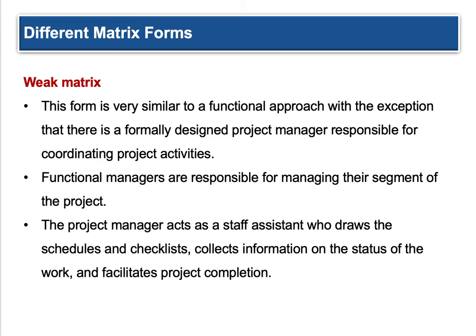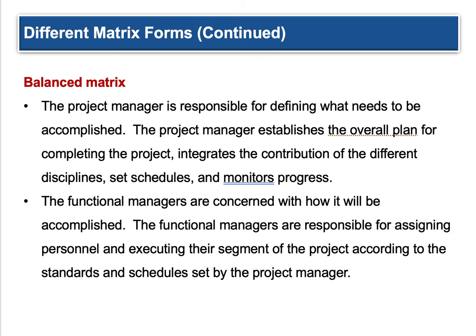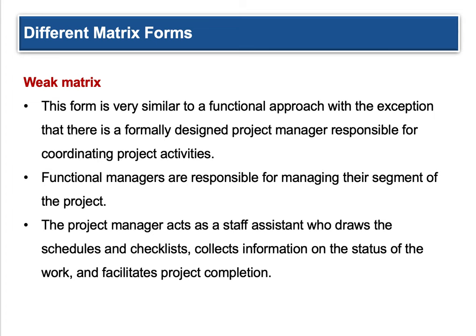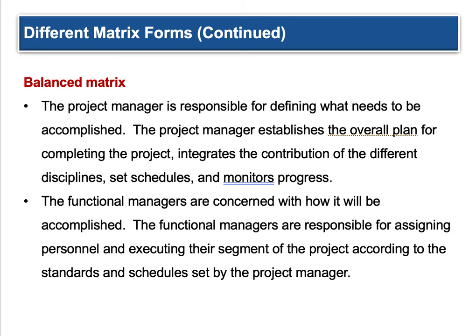In a weak matrix, the functional manager is responsible for managing their segment of the project — they're the owner. That takes out the "lack of ownership" disadvantage. The project manager acts as a staff assistant who draws schedules, checklists, collects status information, and facilitates project completion. In a balanced matrix, the project manager is responsible for defining what needs to be accomplished, establishing an overall plan, integrating contributions of different disciplines, setting schedules, and monitoring progress. Functional managers are concerned with how it will be accomplished — they already have enough to do. They're responsible for assigning personnel and executing their segment, but also must get their other jobs done. So weak leans more functional; balanced is roughly 50-50 between project and function.